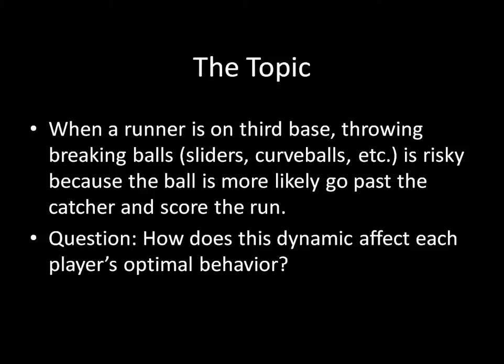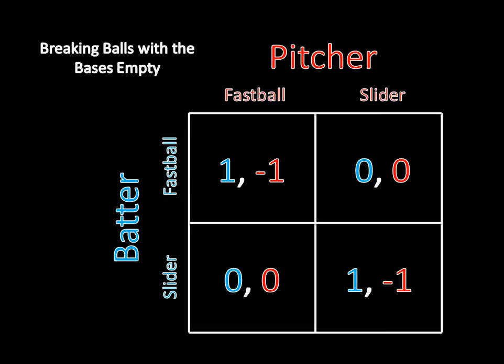The question is how does this dynamic affect each player's optimal behavior? I'm going to draw up a very simple game, limiting pitches to just a fastball and a slider. It doesn't matter if we add more breaking balls like a curveball — all of these results follow straightforwardly from what I'll be saying here.